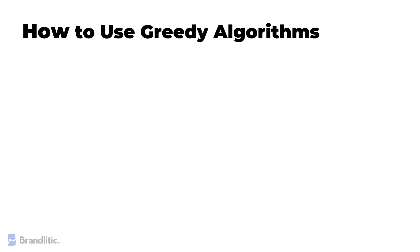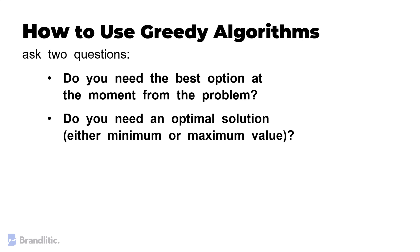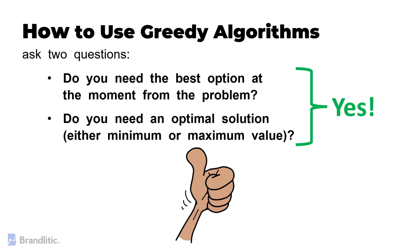How to use greedy algorithms? Before applying a greedy algorithm to any problem, you need to ask two questions. One, do you need the best option at the moment from the problem? Two, do you need an optimal solution, either minimum or maximum value or not? If your answer to these questions is yes, then the greedy algorithm is a good choice to solve your problem.